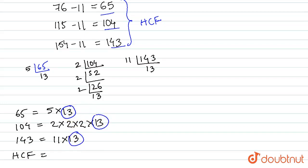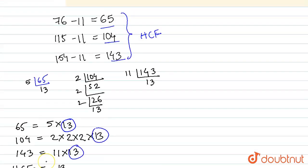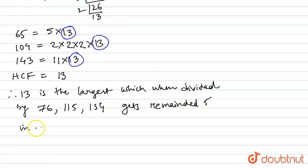So we can write the HCF of this number as 13. So 13 is the number. Finally, we can write: 13 is the largest number which when divided by 76, 115, and 154 gets remainder 11 in each case.